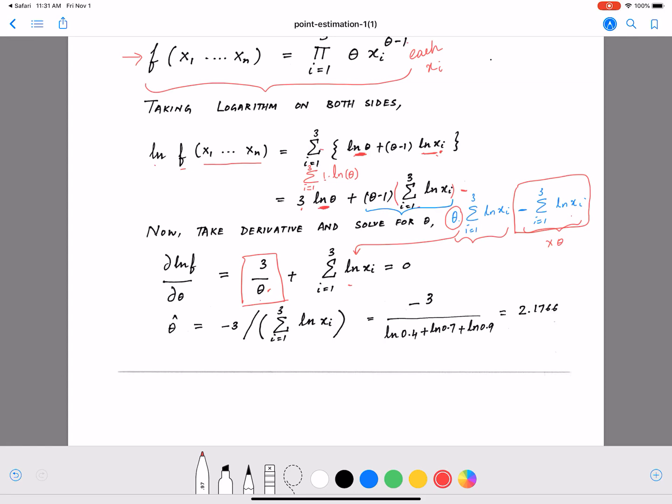After differentiation, we get this form here. We want to solve for theta, so we set this differentiation equal to 0. Now solve for theta. When we take theta to the other side and make all the required adjustments, we get theta to be equal to this value here.